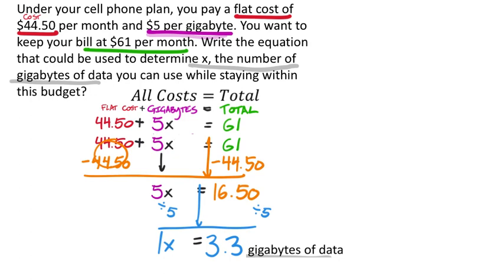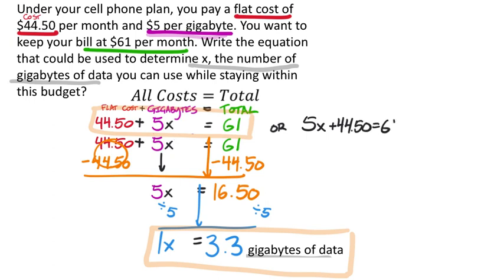Now we can check. You get 3.3 gigabytes of data. This should be correct. I just go to my calculator and type in 44.5 plus 5 times 3.3. When I push enter, I see the 61. Now I know for sure that I've done this correct. On the assignment, you'll expect two parts: the equation first, and then the value of X or whatever the variable is. One last thing: you could write the equation in a different order, like 5x + 44.50 = 61, and you should still get full credit. It's the same exact equation.